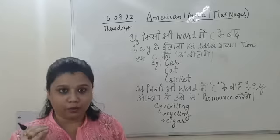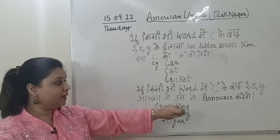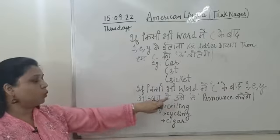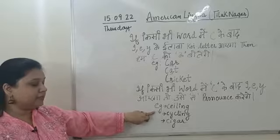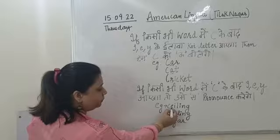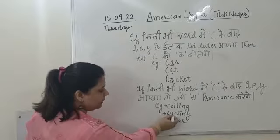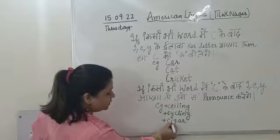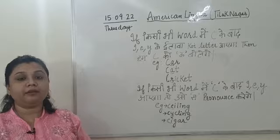On the other hand, if in any word C is followed by I, E, or Y, then we pronounce it as 'sa'. For example, 'ceiling'—C is followed by E here. Another one, 'cycling'—C is followed by Y here. And 'cigar'—C is followed by I here. So ceiling, cycling, and cigar.